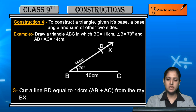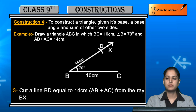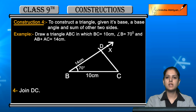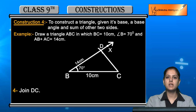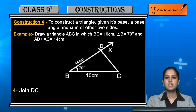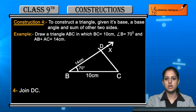The next step is to join D to C. Join the point D that you just cut to point C on line BC. So a line DC is now formed, and we will use this DC line further to construct the triangle.